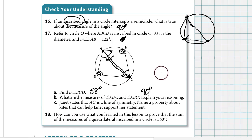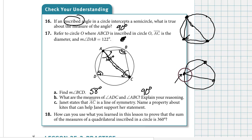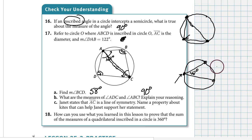To summarize: in this lesson we discussed another kind of angle drawn in a circle called an inscribed angle. An inscribed angle has its vertex on the circle, not in the center of the circle. An inscribed angle is connected to the arc it intercepts — for example, if an inscribed angle is 42 degrees, the arc that it intercepts is 84 degrees.